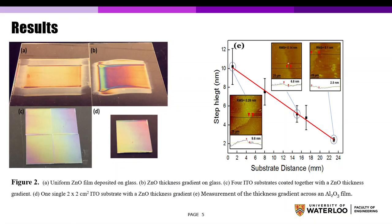Uniform film is obtained by using uniform spacing, as shown in Figure 2A. Thickness gradient films are obtained by using different spacing, as shown in Figures B, C, and D.